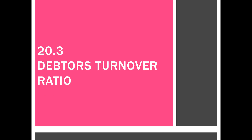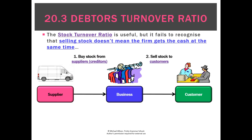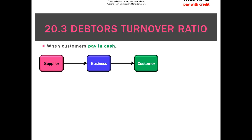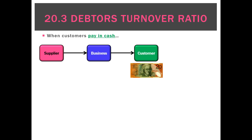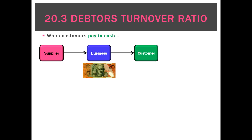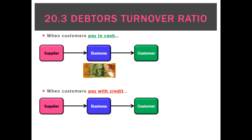The debtors turnover ratio is needed for any business that has credit sales. Whenever a business sells to a customer, it either does so for cash or on credit. For customers that pay with cash, it's quite simple — they give us the money straight away, so it's easier to plan when we're going to get the cash. What's more difficult is when customers buy with credit, because they actually become a debtor.